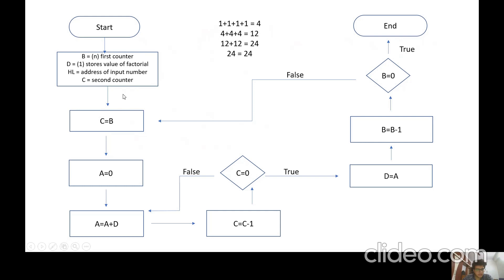In the next block, we set B equal to N, where N is the number whose factorial is to be calculated — let's say four. So we set B equal to four, then we initialize D with one. D stores the value of the factorial. HL is the address of the input number, and C is the second counter. In the second block, C is set equal to B, so since B equals four, C will be equal to four.